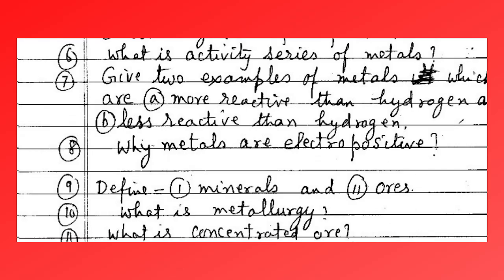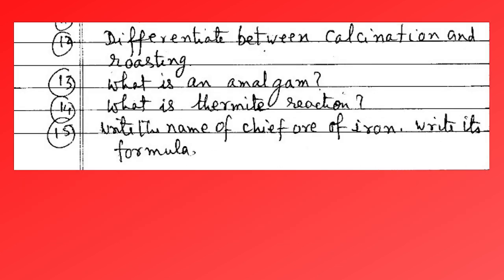What is the activity series of metals? Give examples of metals which are more reactive than hydrogen and also less reactive than hydrogen. Why are metals electropositive? Define minerals and ores. What is metallurgy? What are concentrated ores? Differentiate between calcination and roasting. What is an amalgam?